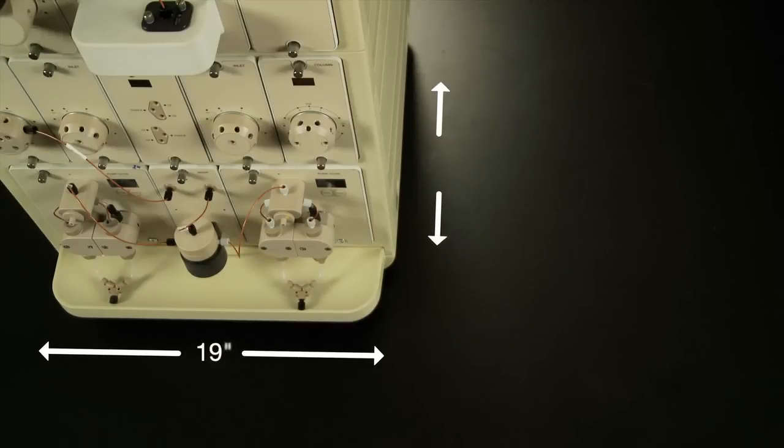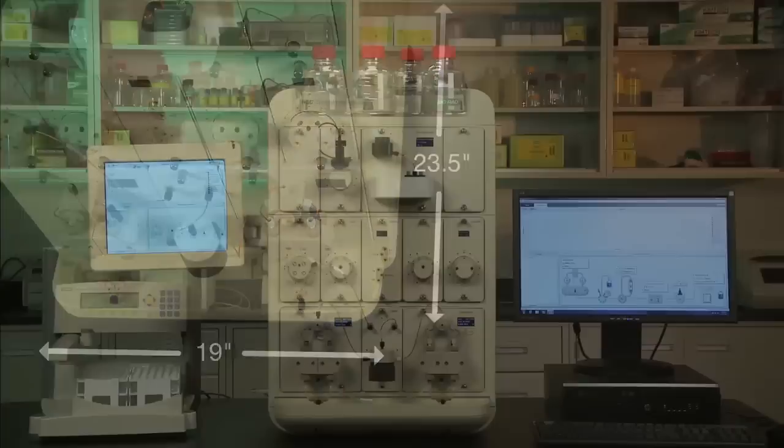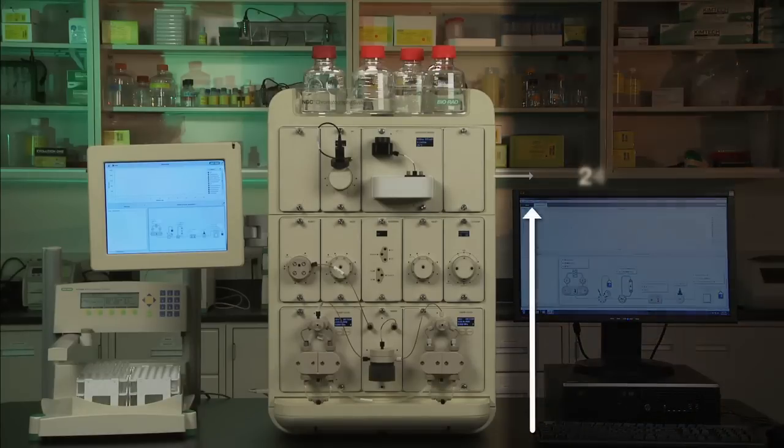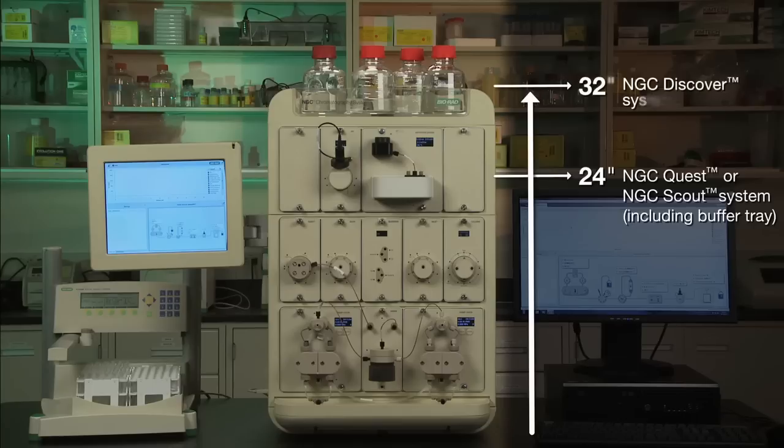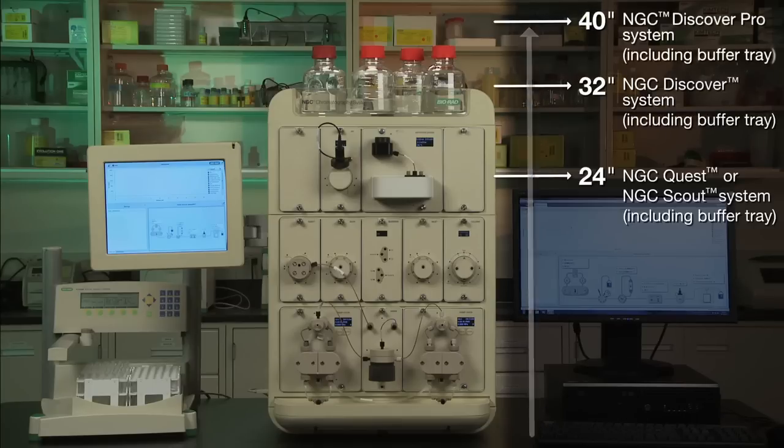A minimum footprint of 19 by 23.5 inches is required to accommodate the NGC instrument with a minimum height of 24 inches for an NGC Quest and Scout, 32 inches for an NGC Discover, and 40 inches for an NGC Discover Pro.